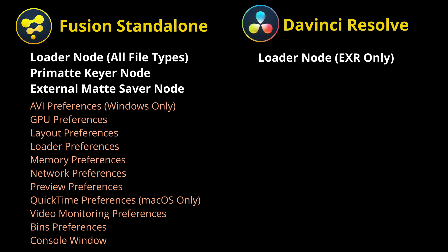The standalone comes with a primary keyer node and the external match saver node, whereas the Resolve version does not. Fusion standalone also offers much more in-depth preferences like AVI, GPU, layout, loader, memory, network preview, QuickTime, video monitoring preferences, and bins with security settings. Additionally, the console window is a little different — within the standalone, the console window is a tab in itself.